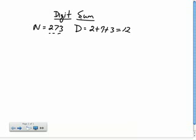So if we take some integer n, let's say 273, the digit sum, which I'm going to call just simply d, is 2 plus 7 plus 3, which equals 12.